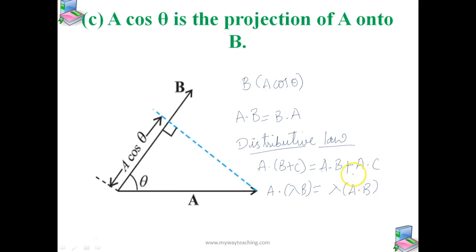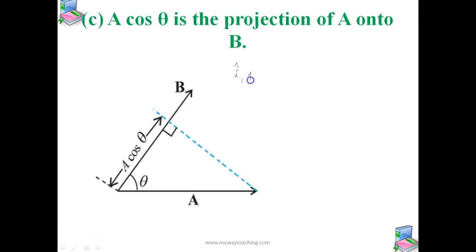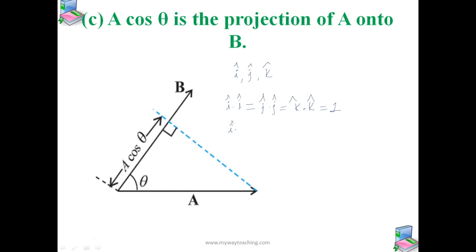The unit vectors i, j, k — the dot product of i·i equals j·j equals k·k, which gives the result as unity, that is 1. And if you consider the dot product of two different unit vectors, like i·j, that equals j·k, which equals k·i. In this case, the dot product of these two different unit vectors will always be equal to 0.